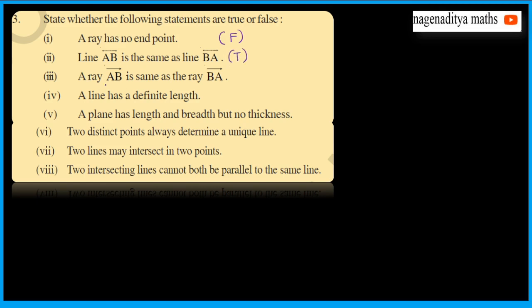'Ray AB is the same as ray BA' — this is false, because ray AB has end point A, while ray BA has end point B, so both are different.